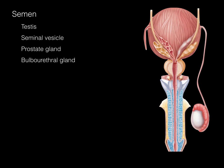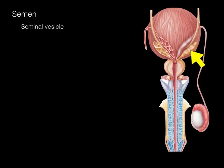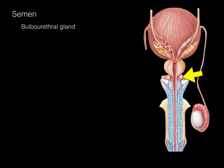Semen is the end product contributed to by four structures. From the testis, we get the sperm. The seminal vesicles contribute the prostaglandins, fructose, and alkaline secretions — about 60 to 70 percent of semen's volume. The prostate gland contributes enzymes and glycoproteins, making up about 30 percent. The bulbourethral glands line the inside of the urethra and contribute only a small percentage. All of these structures contribute to semen, which exits the penis during ejaculation.